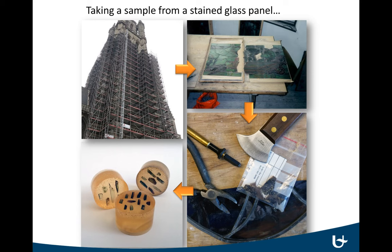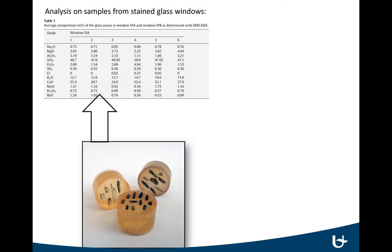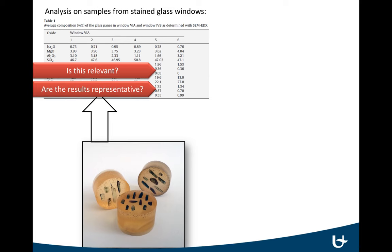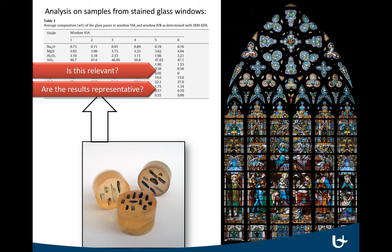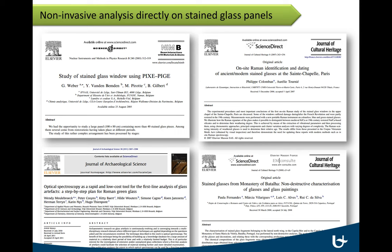Finally, the samples are embedded in resin and polished in cross-section and analyzed. After all of that work, the final result consists of a table showing the weight percentages of the different glass components from, let's say, six to eight samples. One has to raise the question of how relevant or representative the compositional results are for an entire stained glass window. The samples in the resin are approximately eight square millimeters, which means you missed out on the remaining 35 million square millimeters. Knowing all of this, it's not surprising that a number of authors have reported efforts to perform analysis directly on stained glass panels in a non-invasive way, though these are mainly point analyses.